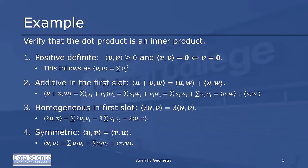In this example, we want to verify that the dot product is an inner product. We first start by trying to prove that it's positive definite. That is, the inner product of v and v is greater than or equal to zero and equal to zero if and only if v is zero. This is true because the dot product of v and v is the sum of the v_i's squared. Squared terms are always greater than or equal to zero, so their sum is always greater than or equal to zero. The only time they're equal to zero is when every component is zero, and that happens only when v is the zero vector. So the dot product is positive definite.